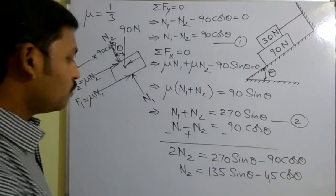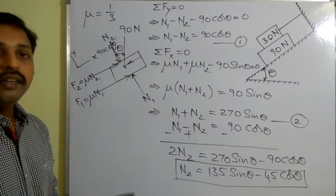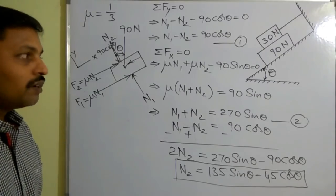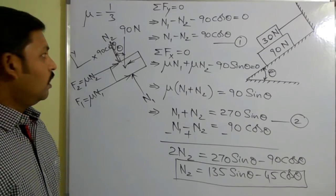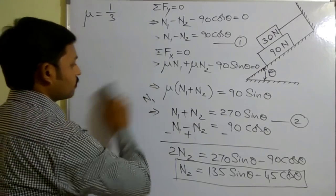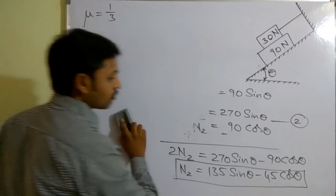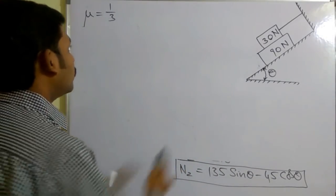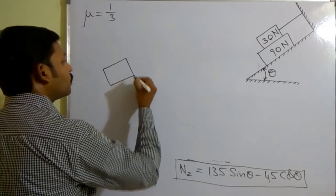Now let us consider the free body diagram for the 30 Newton block. To draw the free body diagram, I need to remove all surface contacts and draw that block separately.